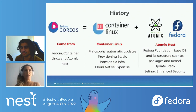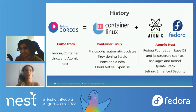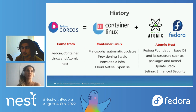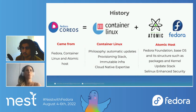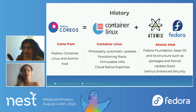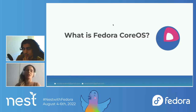Fedora CoreOS basically came from the merging of two communities: the CoreOS Container Linux and the Project Atomic Host. It incorporates the philosophy from CoreOS Container Linux for automatic updates, the provisioning stack, multiple inference, and the cloud expertise. From Project Atomic Host, it incorporates the Fedora foundation — an RPM-based OS and its structure, such as packages and kernels, and also the updated stack and Linux-enhancing security.